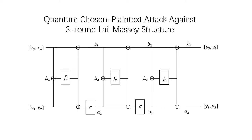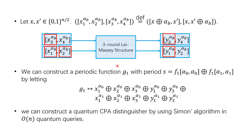We first give a quantum chosen plaintext attack against the three-round Lai-Massey structure. The inputs are x1, x2, x3, x4 and the corresponding outputs are y1, y2, y3, y4. The process is shown in this figure. Let the inputs as defined. We can construct a periodic function g1 with period s, based on x1, x2, x3 and y1 and y3. So we can construct a quantum CPA distinguisher by using Simon's algorithm in polynomial quantum queries.